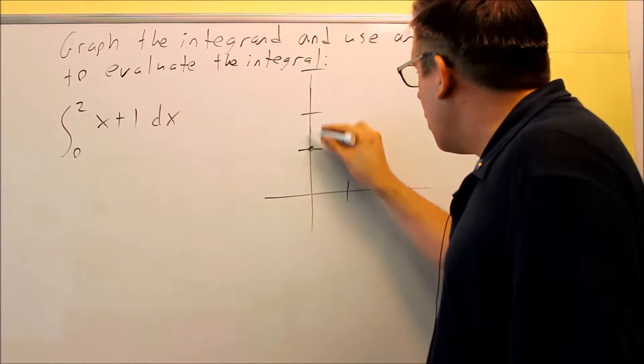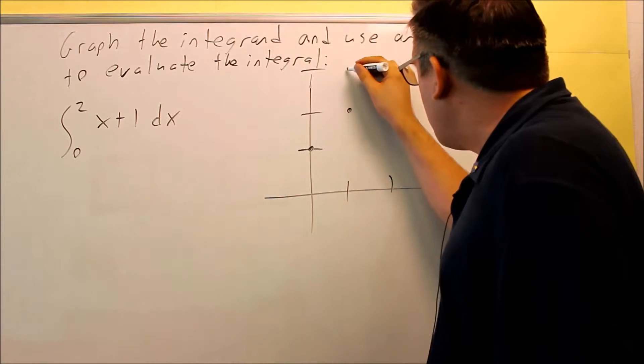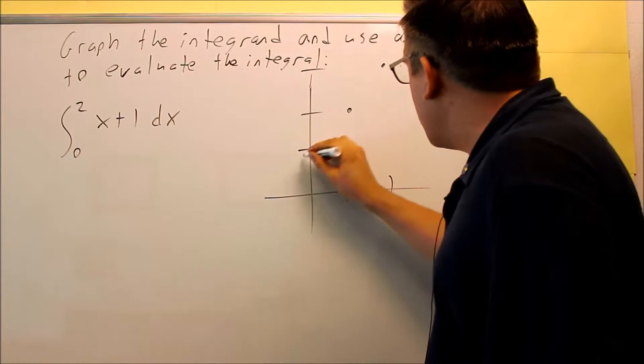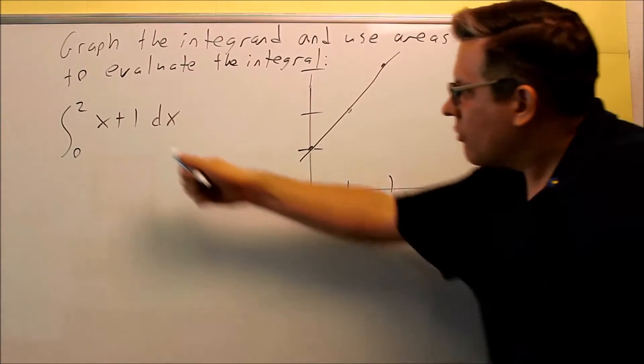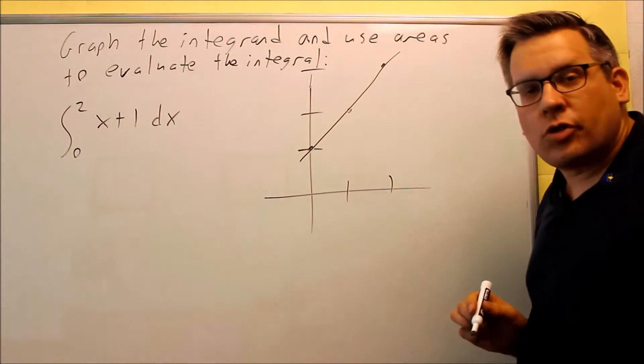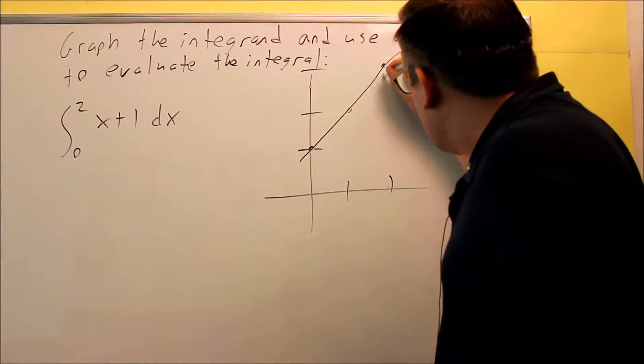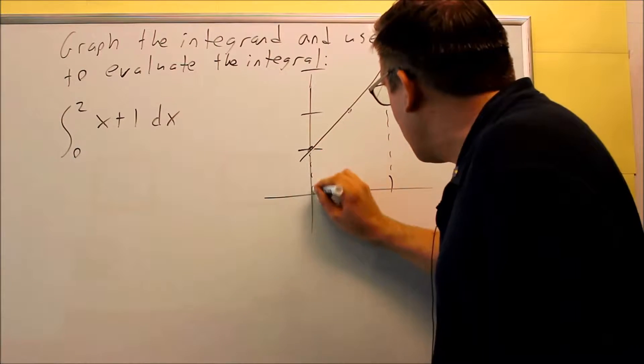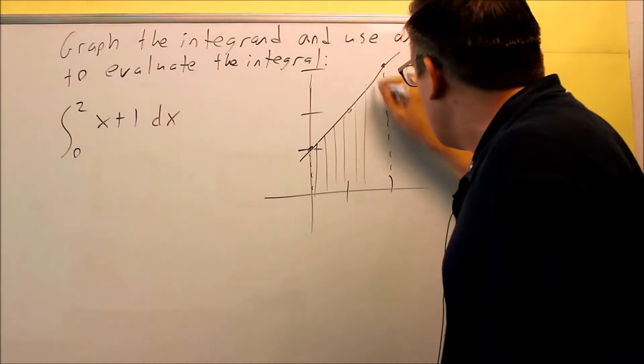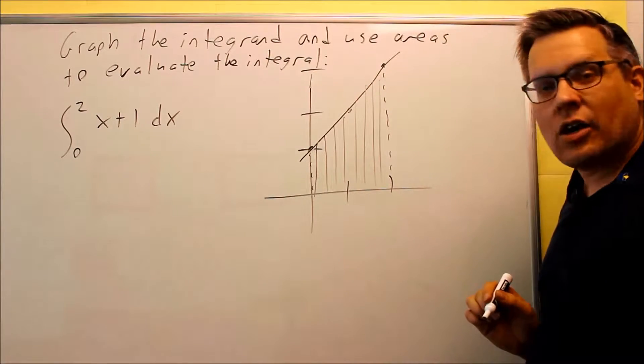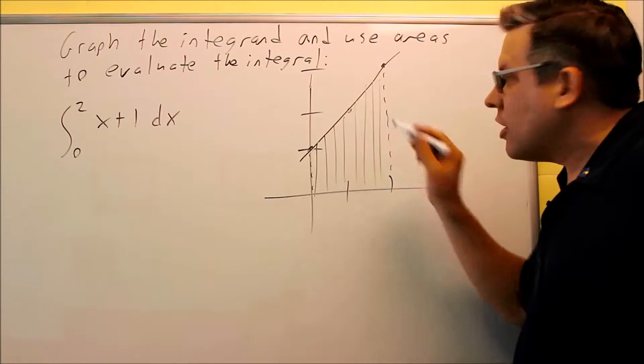Okay, so we start here, go up 1 over 1 to here, up 1 over 1, we get to there. So here is your line, but we're only concerned with the area between 0 and 2. So technically, we just have this space right here, and this is the exact area that you want to find.